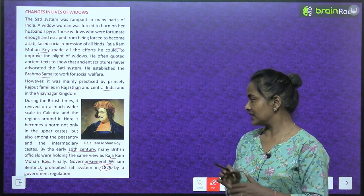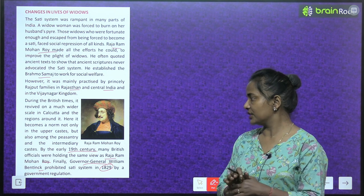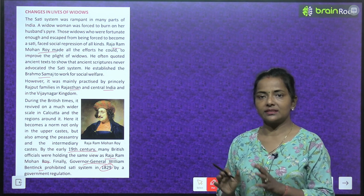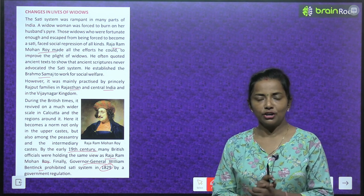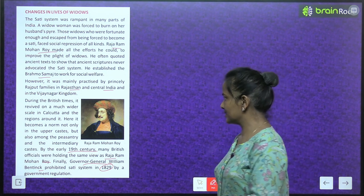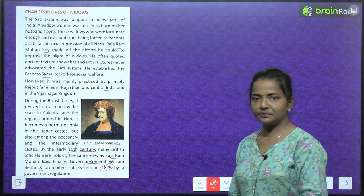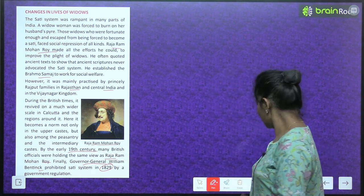Finally, Governor General William Bentinck prohibited the sati system in 1829 by a government regulation.